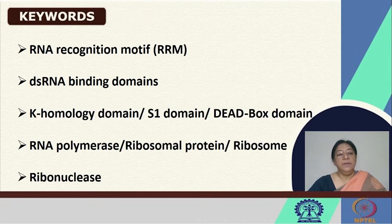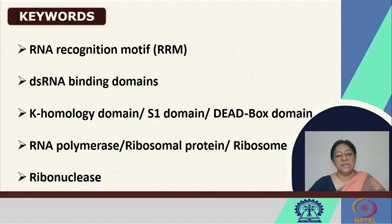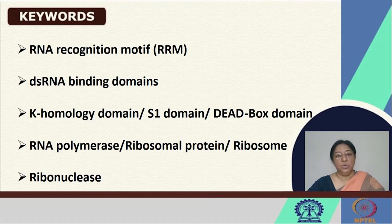In the RNA recognition motif, which is important in the interaction process, we will be looking at several domains that are known: the double-stranded RNA domain, the K homology domain, the S1 and the dead box domains. Then we will look at specific proteins — RNA polymerase, the ribosomal proteins, and ribonuclease.